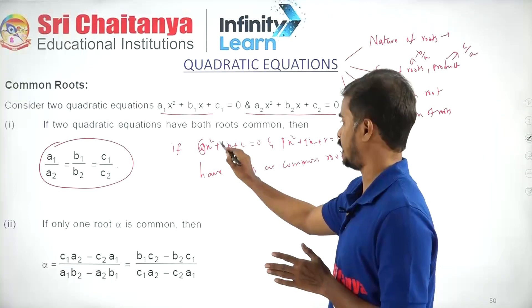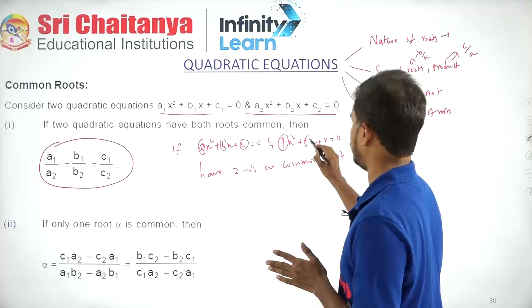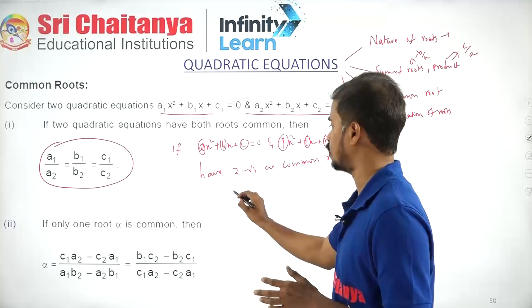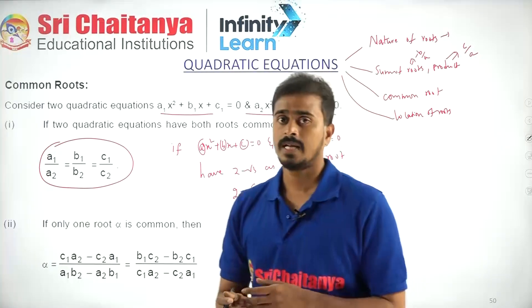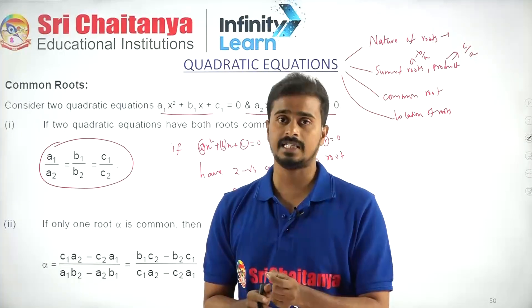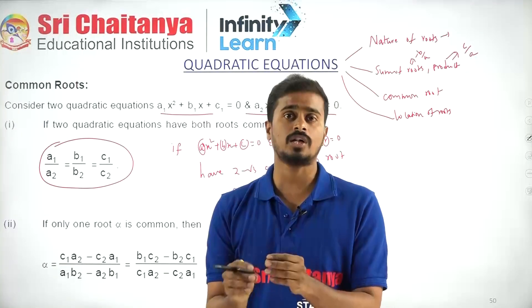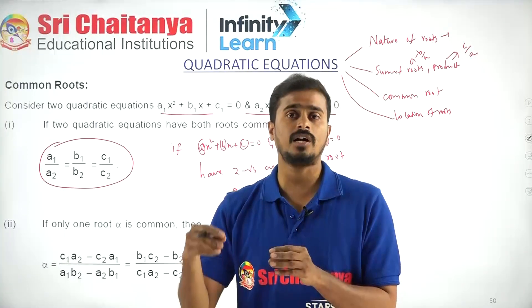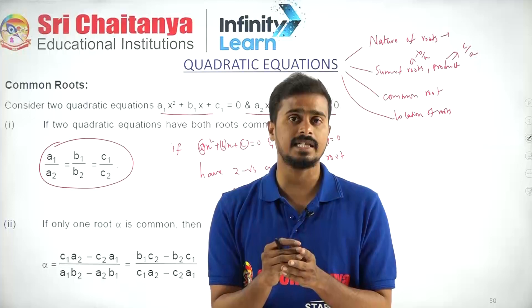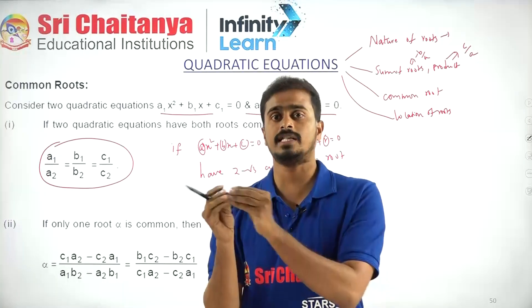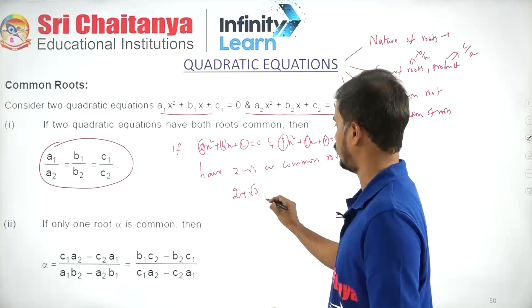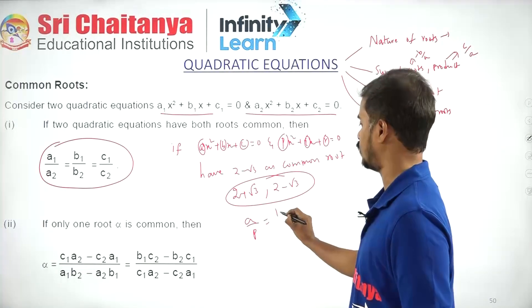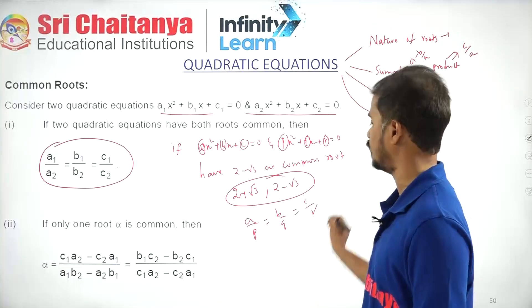Since A, B, C are rational and P, Q, R are rational, and 2 − √3 is a common root, obviously 2 + √3 is also a root. If the coefficients are rational, then irrational roots always occur in pairs. If the coefficients are real, then complex roots always occur in pairs. So both equations have 2 − √3 and 2 + √3 as roots, and effectively A/P = B/Q = C/R.